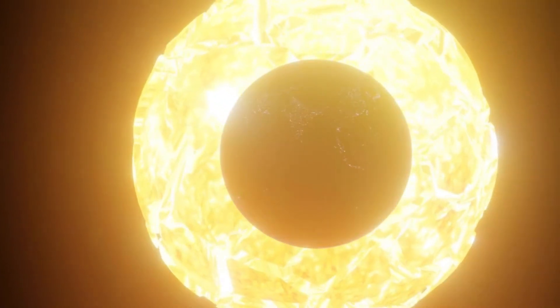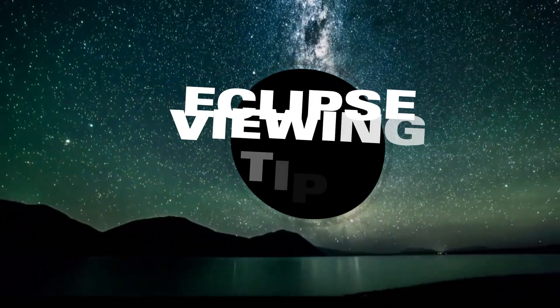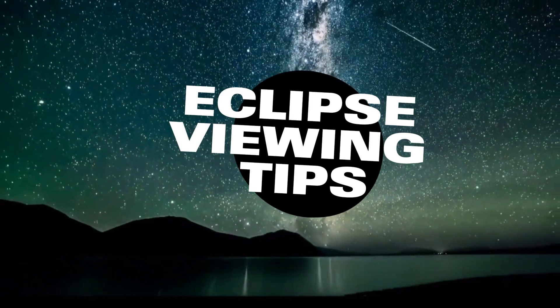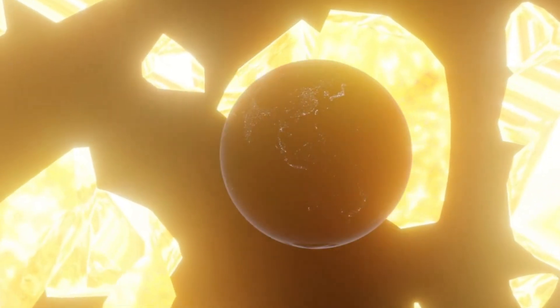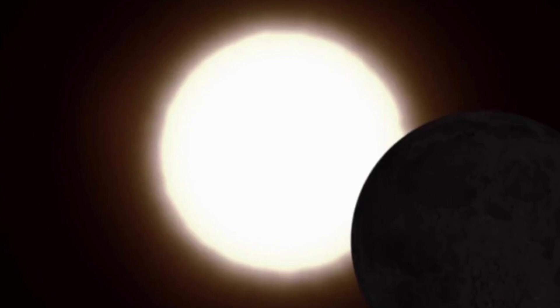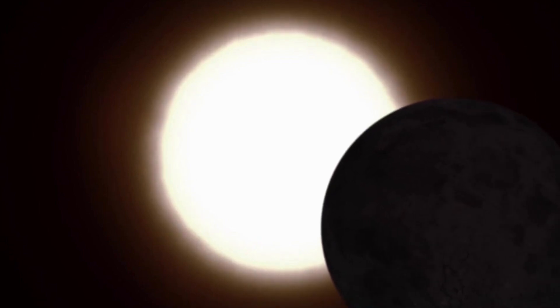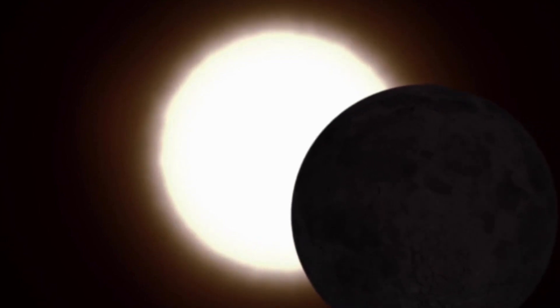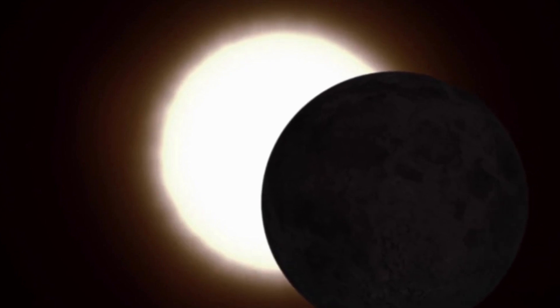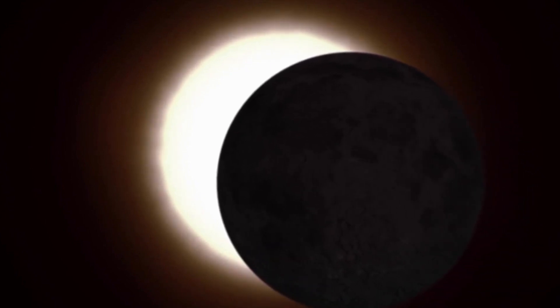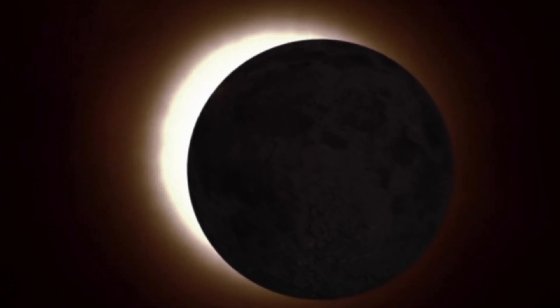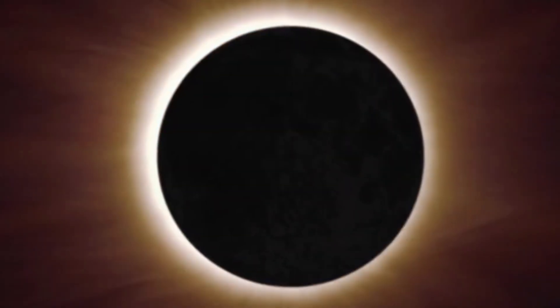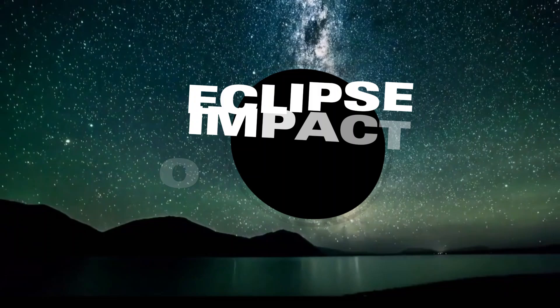Question number three. Eclipse viewing tips. If you're planning to witness a solar eclipse, it's crucial to take precautions to protect your eyes. Never look directly at the sun without proper eye protection, such as solar viewing glasses or a solar filter for telescopes. Alternatively, you can create a pinhole projector to safely observe the eclipse's progress.